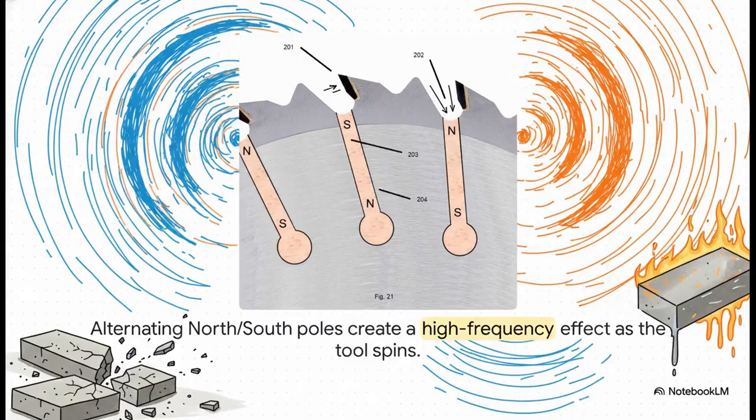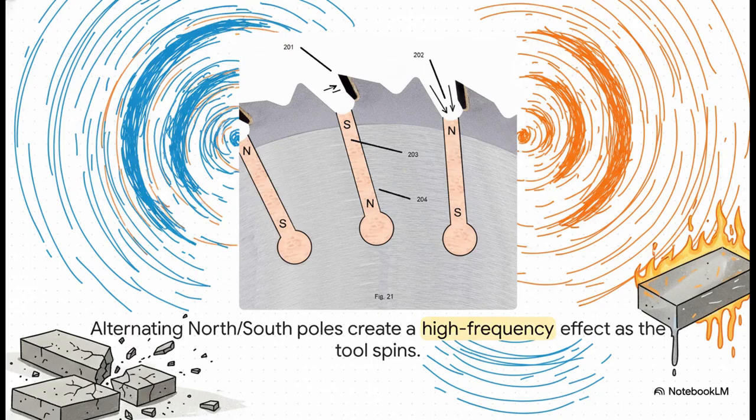The real genius is how they arrange the magnets. They alternate them north, south, north, south. As the tool spins, this creates an incredibly high-frequency magnetic field. Let's put that in perspective. A saw blade spinning at 2,500 RPM with 32 magnets could generate an induction frequency of 40,000 cycles per minute. That is the same kind of power you see in industrial induction furnaces, the kind that can melt solid steel in seconds.